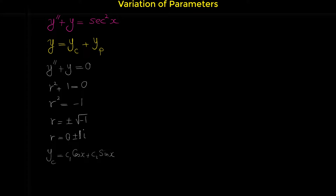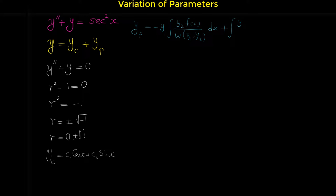The particular solution equals negative y1 times the integral of y2 times f of x over the Wronskian of y1 and y2 dx, plus y2 times the integral of y1 times f of x over the Wronskian of y1 and y2 dx. Don't worry if you don't know any of these — y1, y2, f of x, or the Wronskian — I will explain them in a moment.